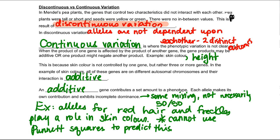In continuous variation, as you can imagine, it's the exact opposite. It's where that variation is not clear-cut and the product of one gene is affected by the product of another gene. The gene products may be additive or one product might negate another product.